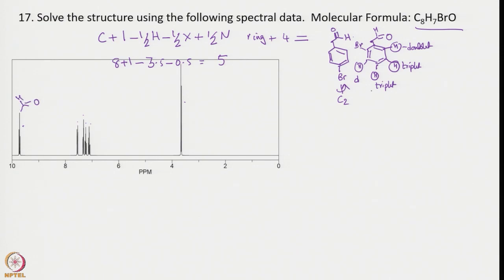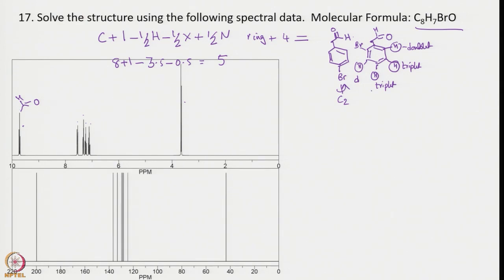For further confirmation, we have the 13C NMR as well. For para-bromobenzaldehyde, we would expect 6 carbon signals due to symmetry, but looking at the 13C NMR of our compound we see 8 signals — 1 through 8 — all non-equivalent carbon atoms. This confirms the ortho-bromo substitution pattern.